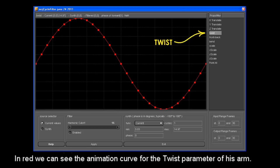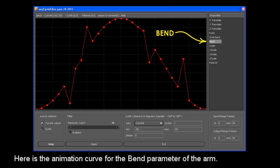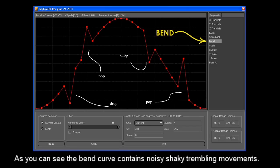Here in red we can see the animation curve for the twist parameter of his arm. And here is the animation curve for the bend parameter of the arm. As you can see, the bend curve contains noisy, shaky, trembling movements.